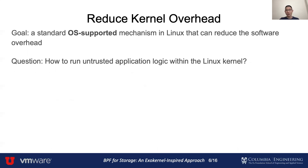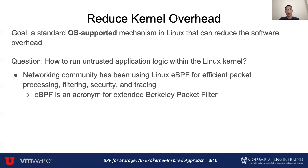But now the question is, how to run untrusted application logic in the kernel? We turn to the networking community, where high-performance devices are common. We find that Linux eBPF is widely used for efficient packet processing, filtering, security, and tracing. eBPF is an acronym for Extended Berkeley Packet Filter. Initially it was only used to filter network packets, and then it was extended to support more use cases. We call eBPF interchangeably with BPF for the rest of the presentation.